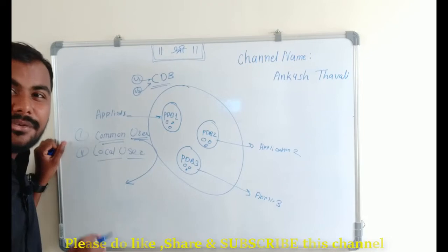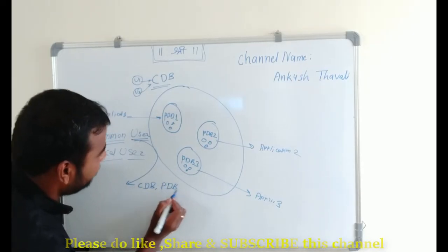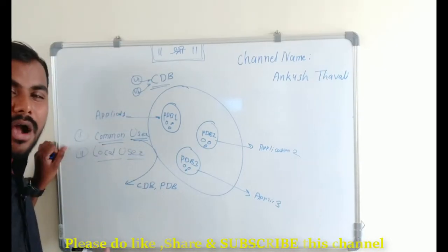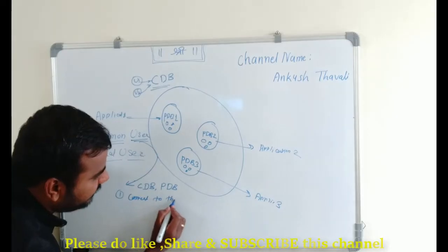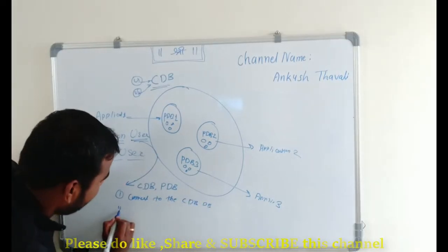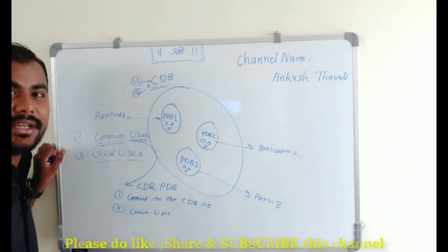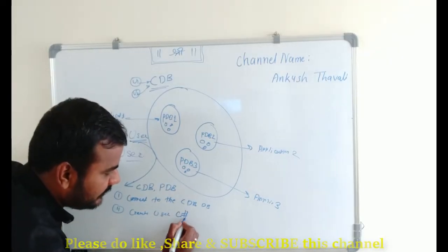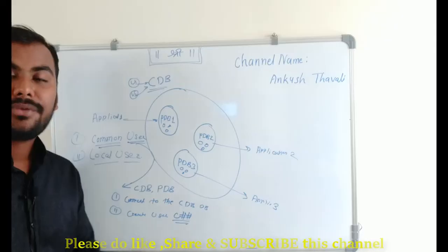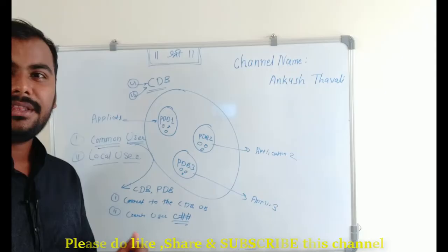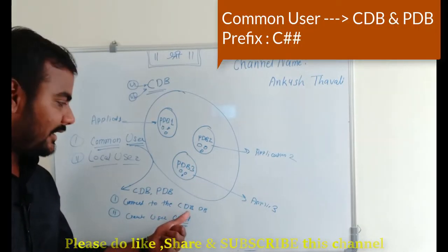Let us talk about the common user first. If you create a common user, it will be created inside the container database as well as in the pluggable databases. To create a common user, you need to connect to the container database and fire the command: CREATE USER username IDENTIFIED BY password. The trick here is that you need to create the user with the prefix C## — this is what makes a common user different.